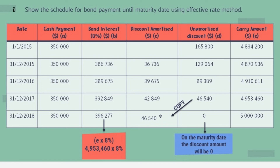For the final year, all columns are calculated the same way, but the unamortized discount must be set to zero at maturity. This shows that all discount has been fully amortized with nothing remaining. For the discount amortized column in the last year, simply use the previous year's unamortized discount balance, which is $46,540.